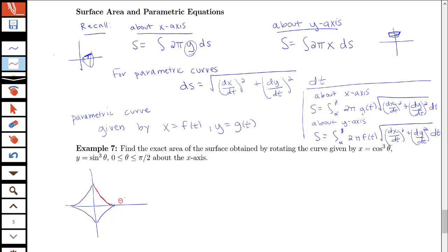Remember θ equals 0 is here, which gave us the point (1, 0), and θ equals π/2 is up here. That gives us the point (0, 1). So we're interested in rotating this portion of the curve here about the x-axis.